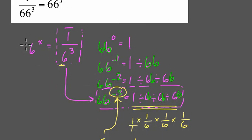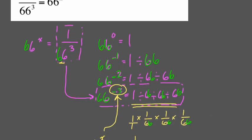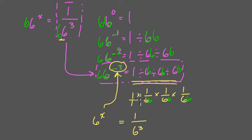And then we have the same thing happening here. Here, instead of dividing by 66, we can multiply by 1 over 66 three times. And then instead of computing that exactly, we could say that that's 66 to the 3rd power.